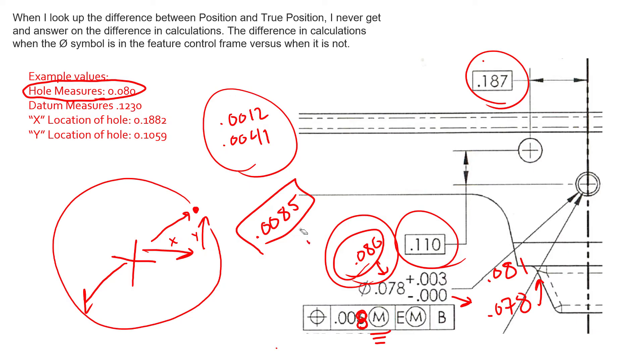Well we see that we measured eight and a half thousandths, so we are still outside of our tolerance. This would still be a failing part. So we'd have to fail this, but then we also notice that we have the MMB modifier.